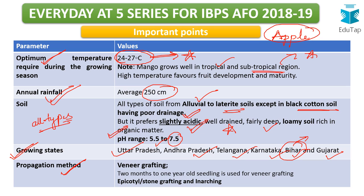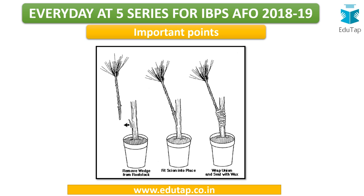Regarding propagation method: as with apple, propagation can be done through vegetative or asexual methods such as budding or grafting. For mango, the most popular type of grafting is veneer grafting. Other types include epicotyl or stone grafting and inarching. In grafting, there are two parts: the scion, which is the upper portion, and the rootstock, which is the lower portion. The upper portion of one plant and the lower portion of another are combined and allowed to grow as a single plant.